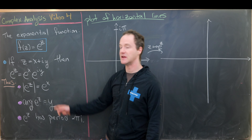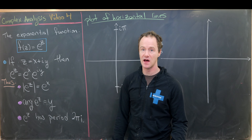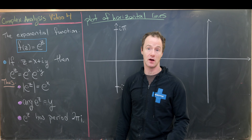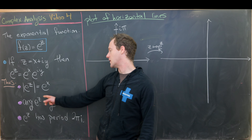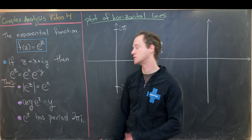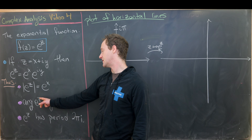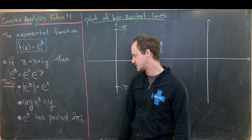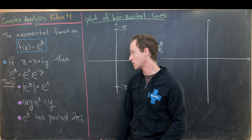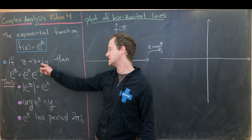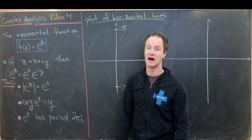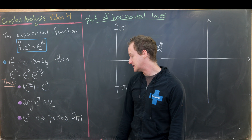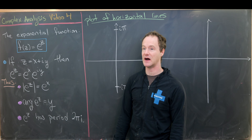Notice we don't need absolute values here because e to a real number is always positive. Furthermore, the argument of e to the z is equal to y — so the argument of e to the z is the same as the imaginary part of z. Also, because of the decomposition of e to the iy into cosine y plus i sine y, we see that e to the z has a period of 2πi.